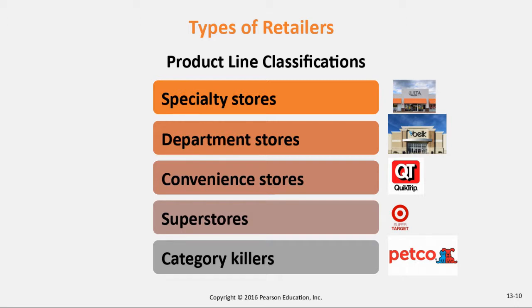Then we have category killers. What is a category killer? I have Petco as an example. Best Buy would also be an example. These are super stores with a huge selection of a particular product line that is both long and deep. Rather than a small specialty store like Ulta, these are giant specialty stores — much bigger, with a huge amount of product in their category.